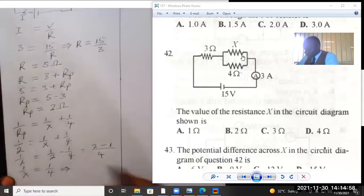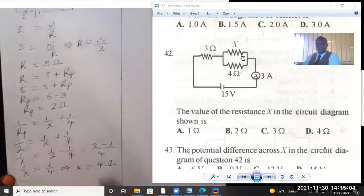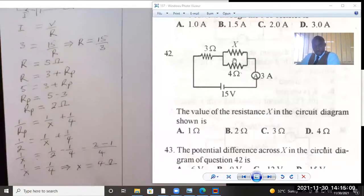If you cross multiply, that means X is equal to 4. 4 ohms. So the resistance of resistor X is 4 ohms from the calculation there.